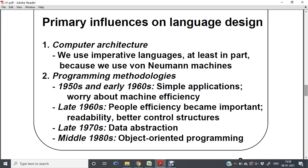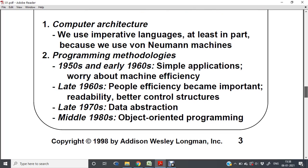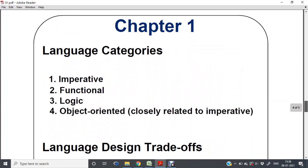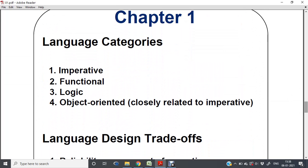From the 1950s to 1960s, there were simple applications. In the late 1960s, people efficiency became important and readability and better control structures came into picture. Late 1970s introduced data abstraction in programming languages, and the 1980s introduced object-oriented programming.